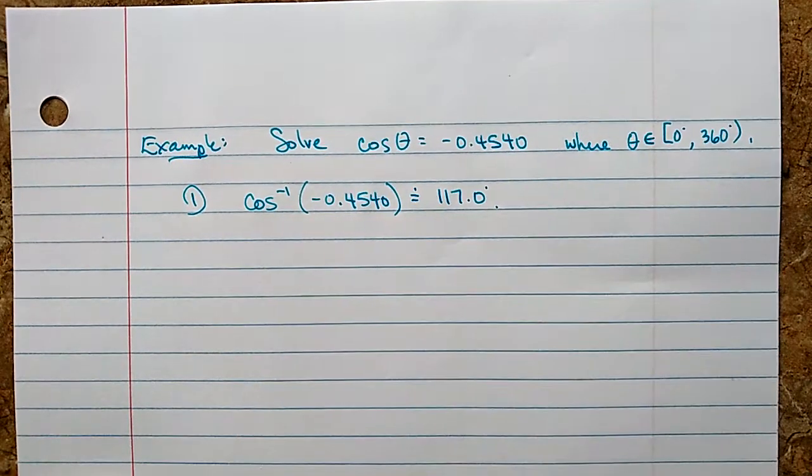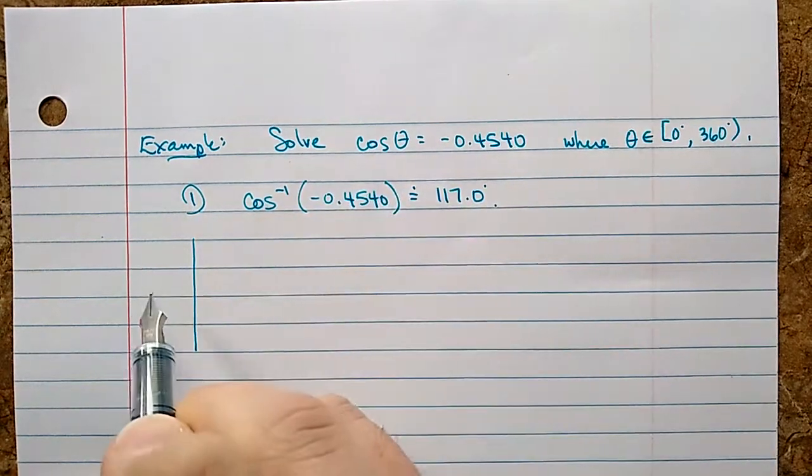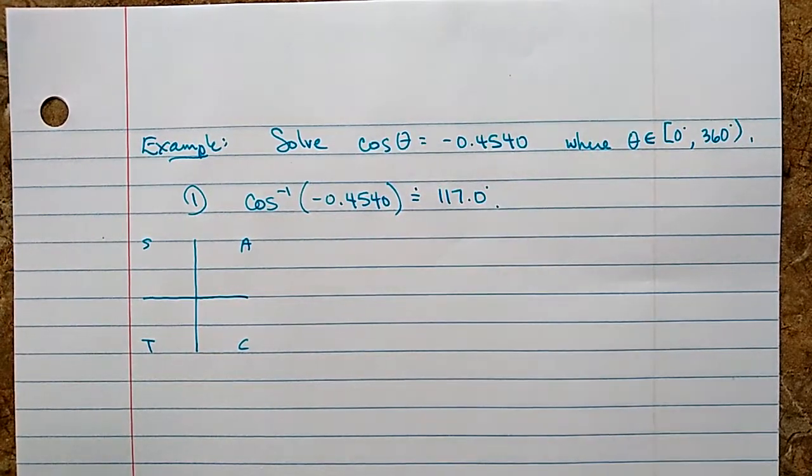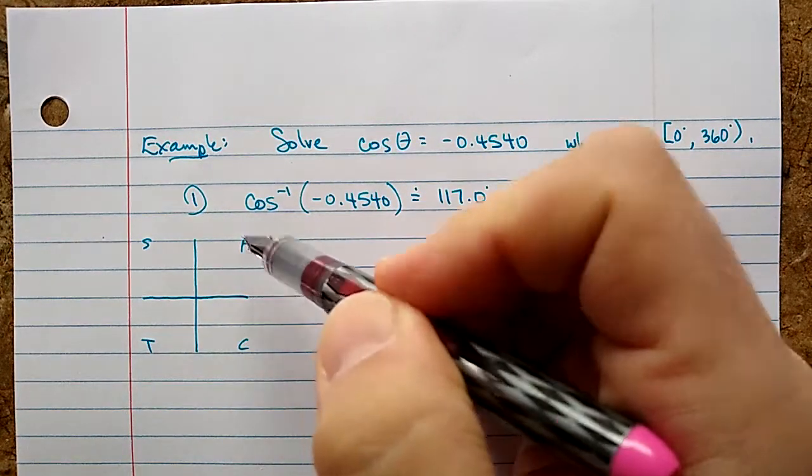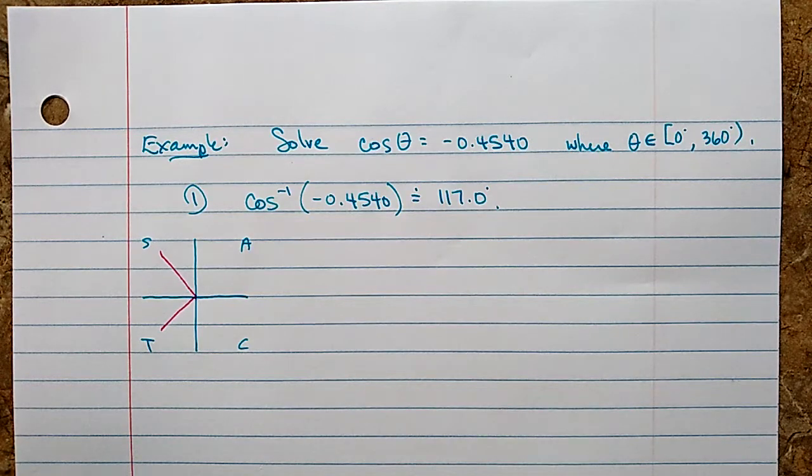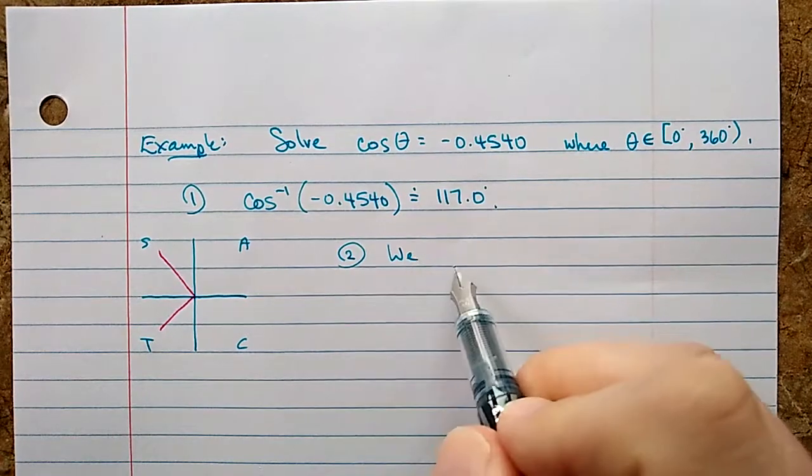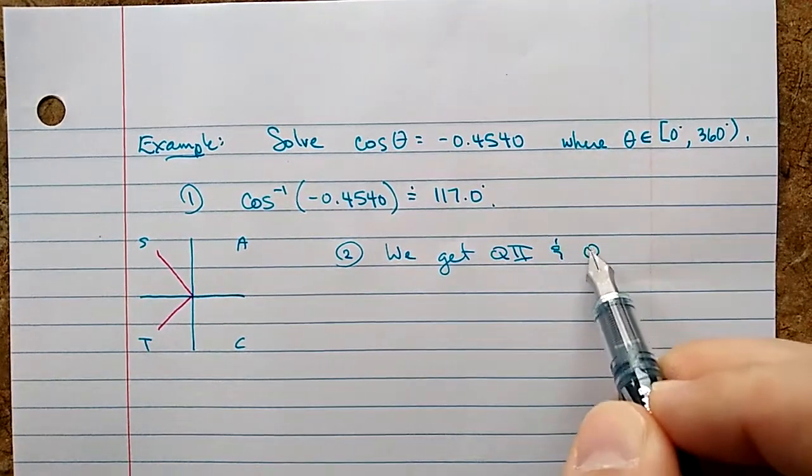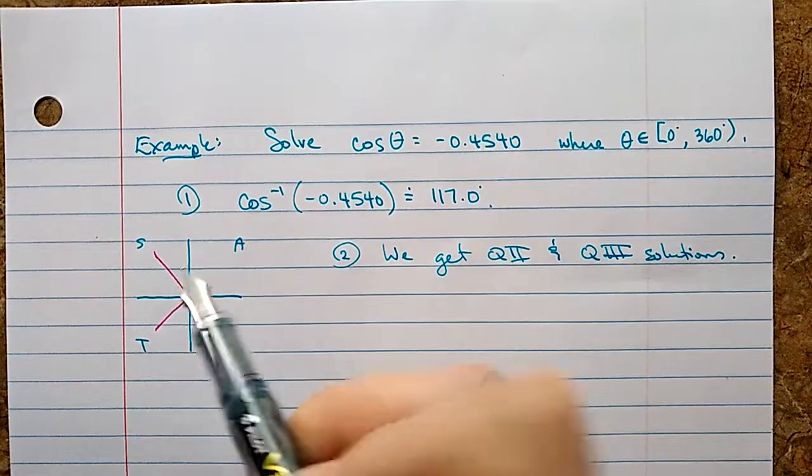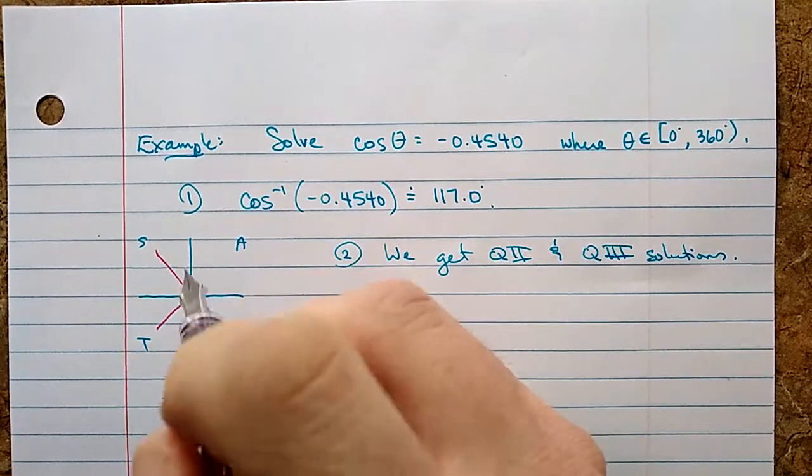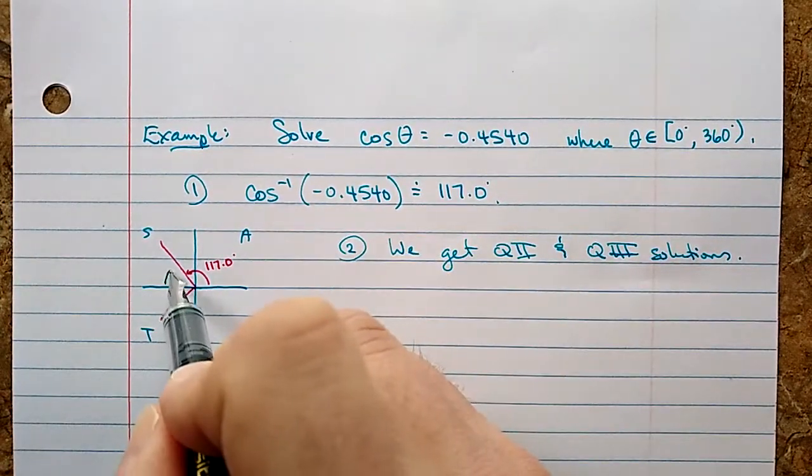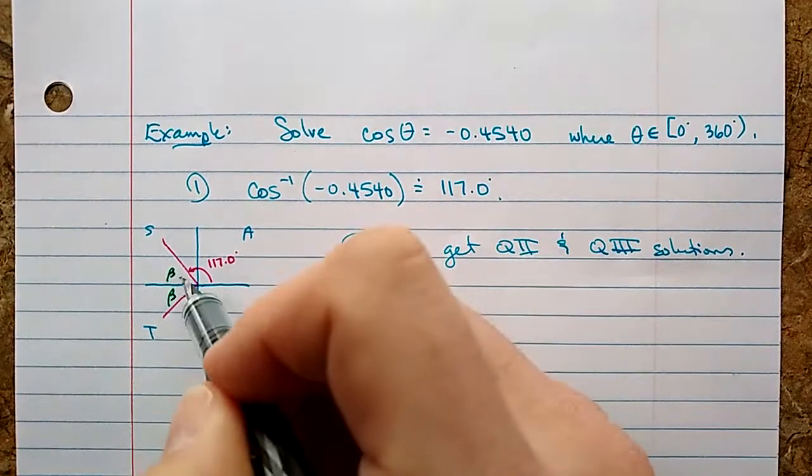Now we go to the CAST rule and see if that's something we were expecting. Cosine of theta is a negative number. Negative numbers for cosine happen while that's positive, everything's positive there. So I'm looking for angles that are over here or over here - quadrants two and three. We get Q2 and Q3 solutions. Now 117 degrees is a quadrant two solution. So that's fine.